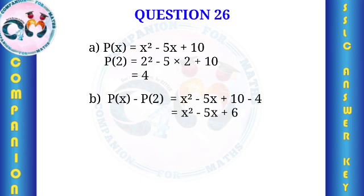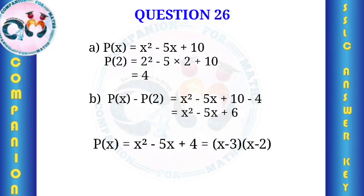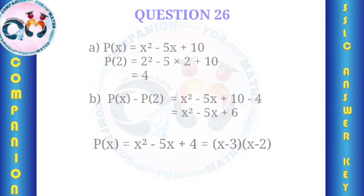P(x) minus P(2): that is x² minus 5x plus 10 minus P(2). The answer is x² minus 5x plus 6. Using the quadratic formula: minus b plus or minus root of b² minus 4ac, we factor x² minus 5x plus 6 as (x minus a)(x minus b), comparing values of the two polynomials.